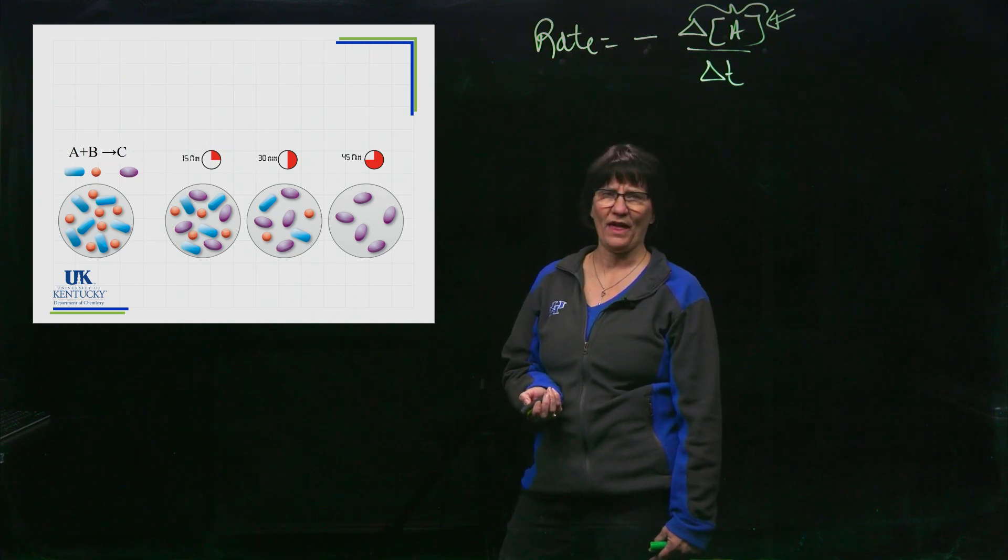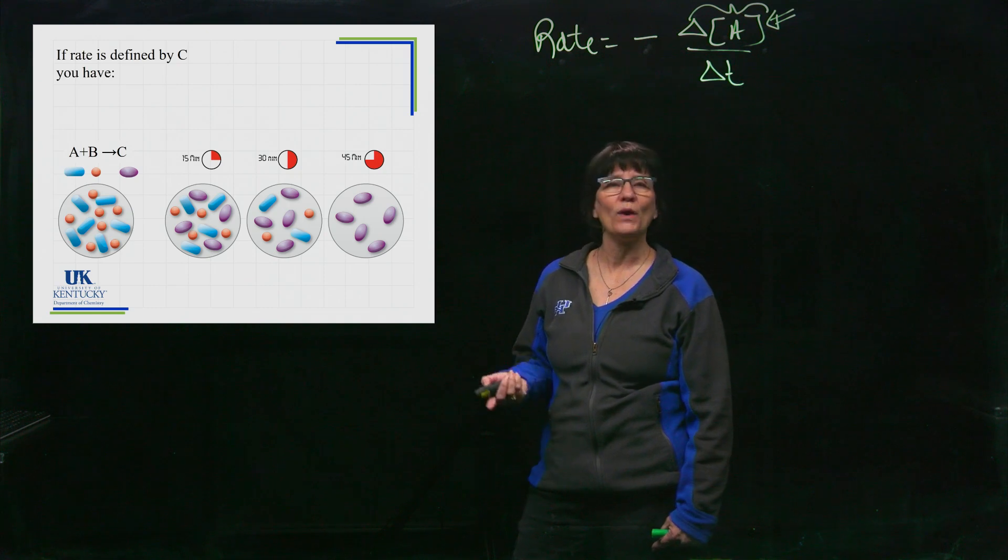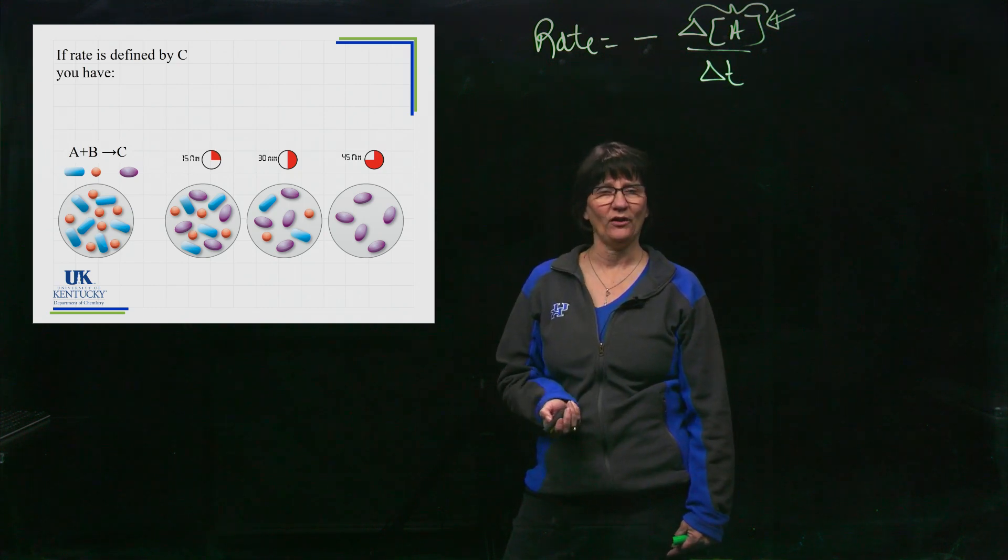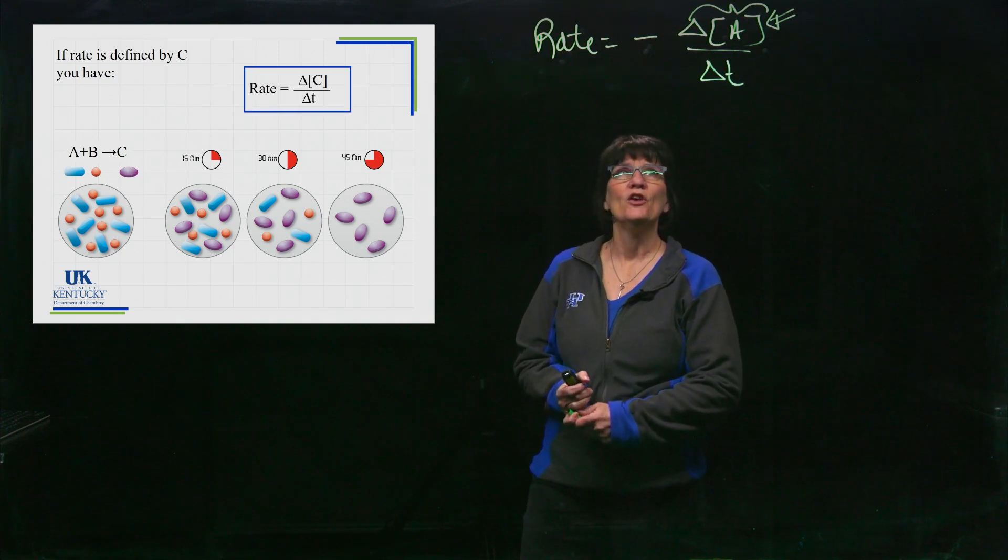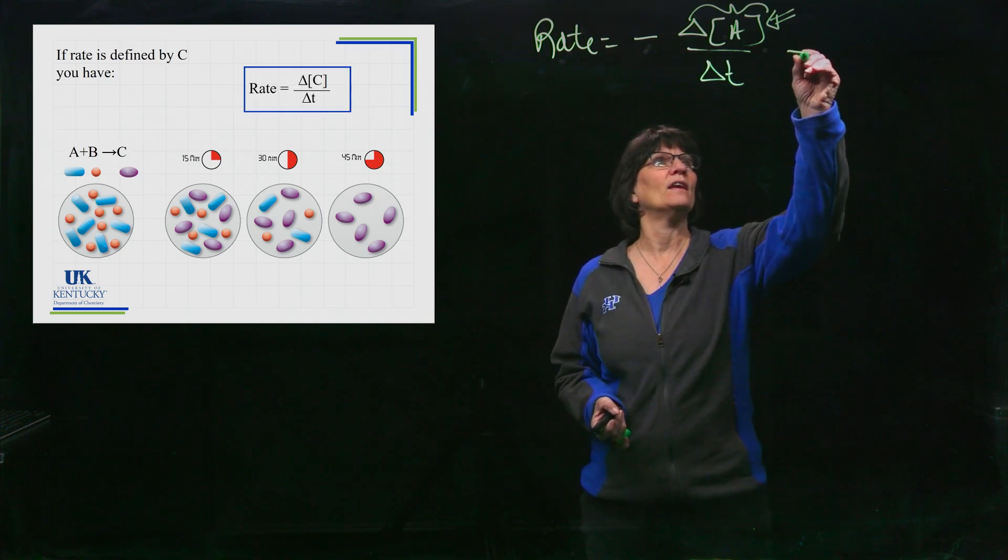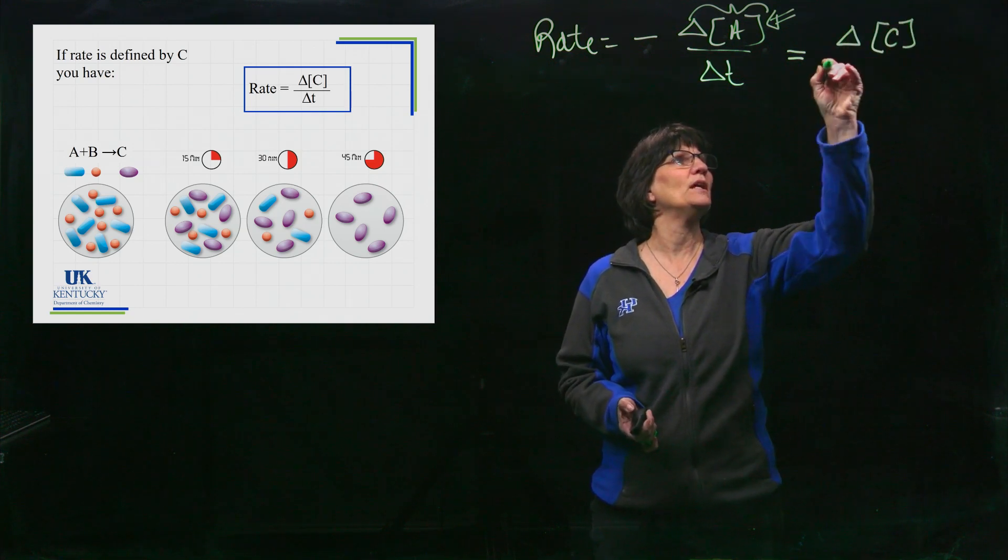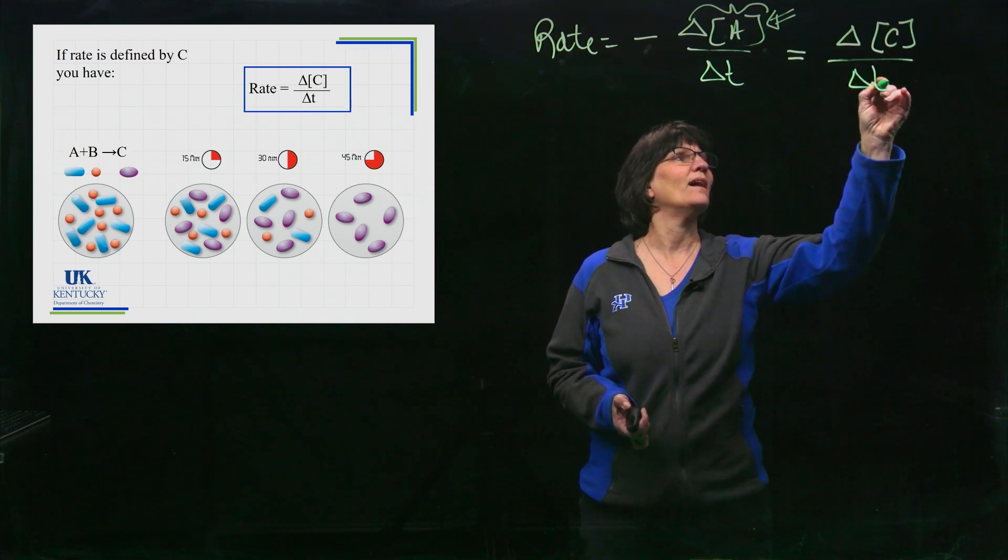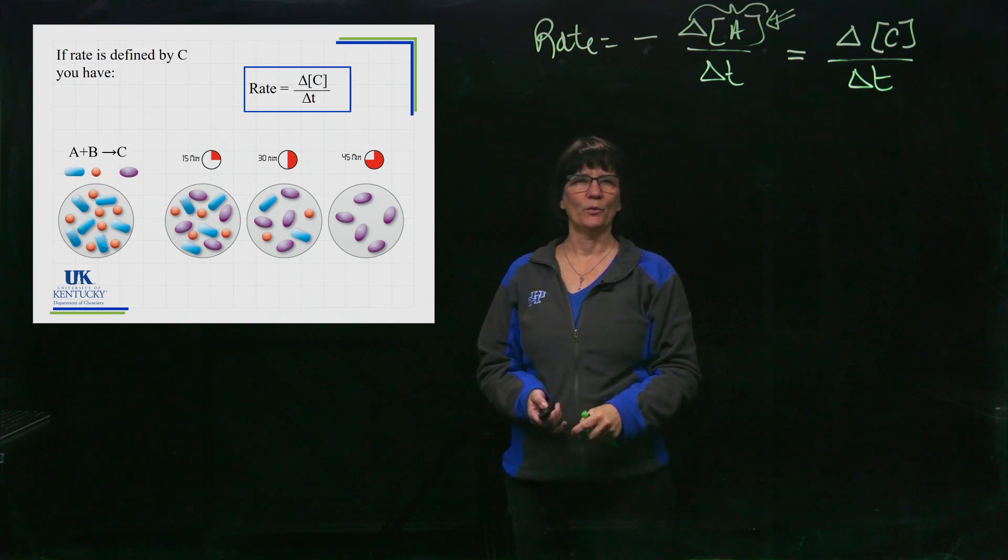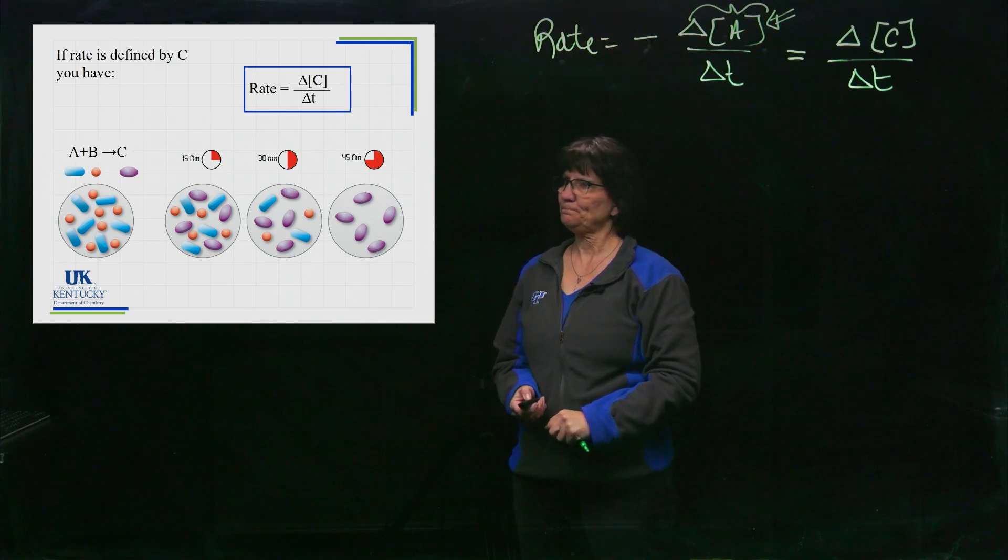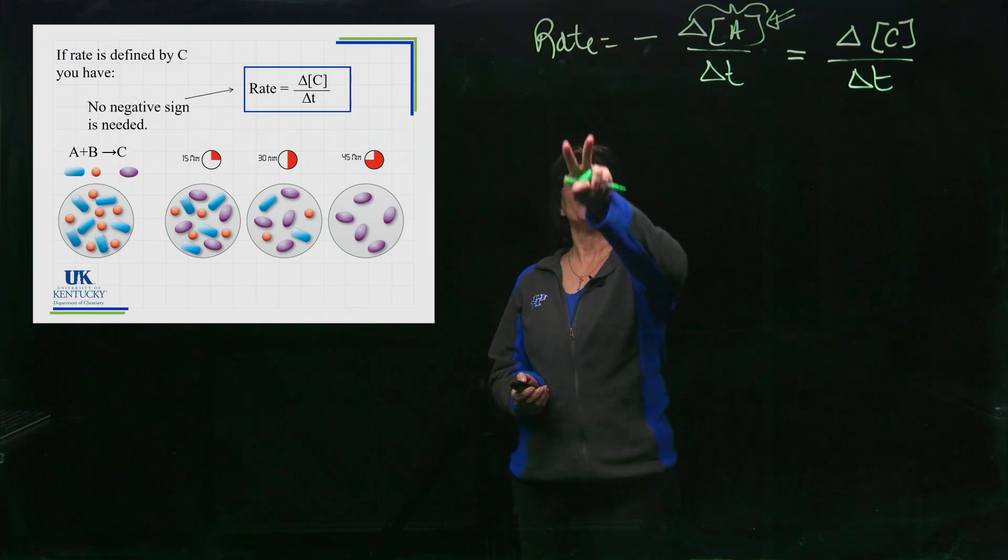So we can ask the same type of question with that. If it's increasing, how would we define the reaction in terms of C increasing? Well, Delta C is already positive, right? So we could also define this in terms of the changing concentration of C as it appears with respect to time. We don't need a minus sign in there to make them equal to the rate of the reaction. Okay, no negative sign is needed.